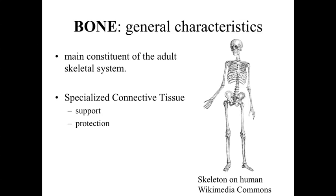We're going to be looking at bone in today's lecture. To start out with the general characteristics, what we're looking at is a structural component as a specialized connective tissue — the main component found within the adult skeletal system. If we think about the gross anatomical bones of the body, we recognize that they're there for both support of the body structure, giving it a three-dimensional shape, and allowing it to interact with muscle cells to allow movement.